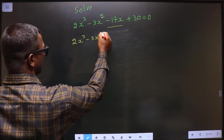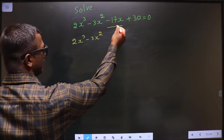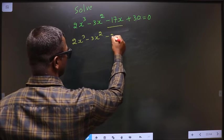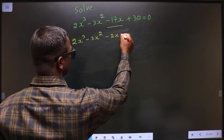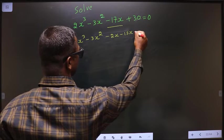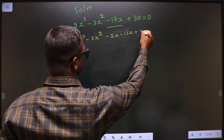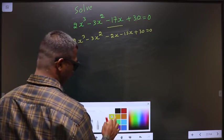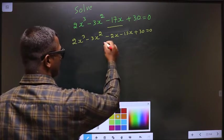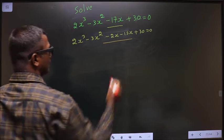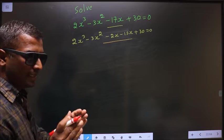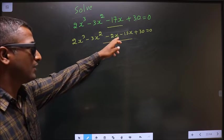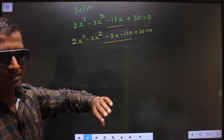In place of minus 17x, I write minus 2x minus 15x, plus 30 equal to 0. In place of minus 17x, I have written minus 2x minus 15x.